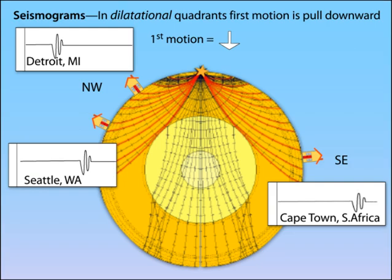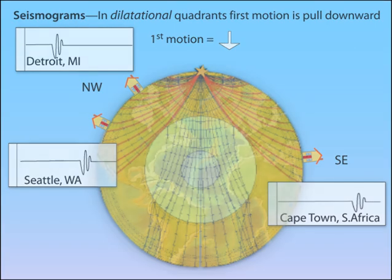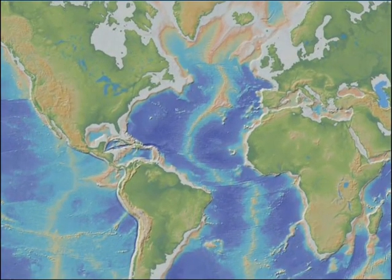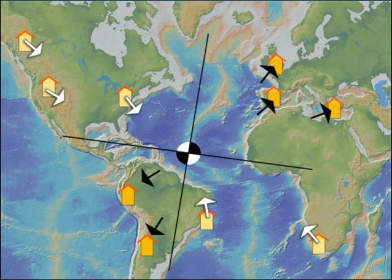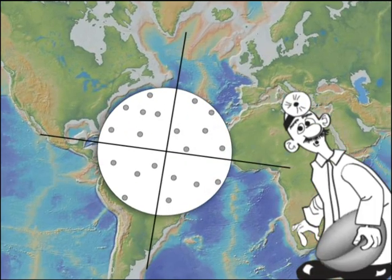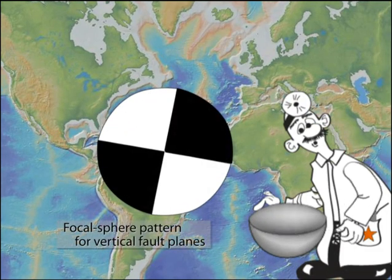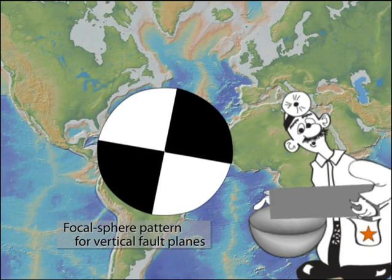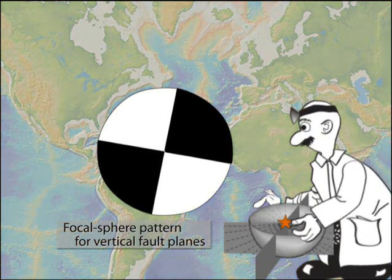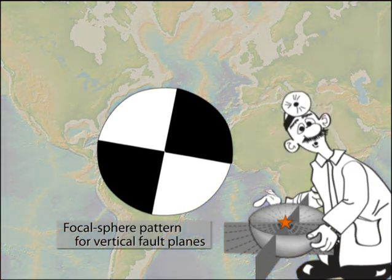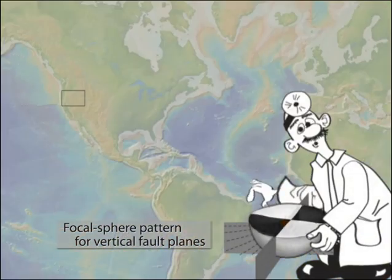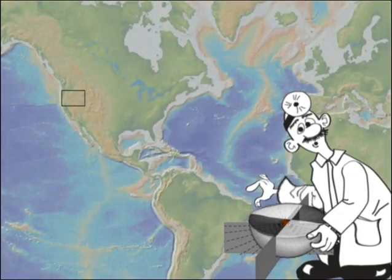By examining first arriving P waves at many stations over a range of azimuths and distances from the earthquake, we can determine the pattern of compressions and dilatations on the lower hemisphere of the focal sphere. As we have seen, a strike-slip earthquake produces a crossing pattern of approximately vertical faults, or nodal planes, that separate two compressional and two dilatational quadrants.